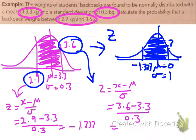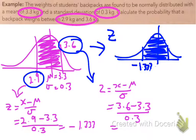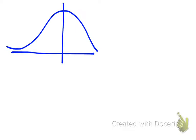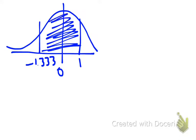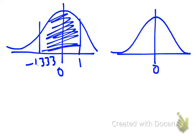So on our z-distribution we have a mean of 0, a negative z value of negative 1.333, and a positive z value of 1. We want to find the probability between those two points. On our probability tables, if we go from the mean of 0 up to the z value of 1, we can find that piece of area.